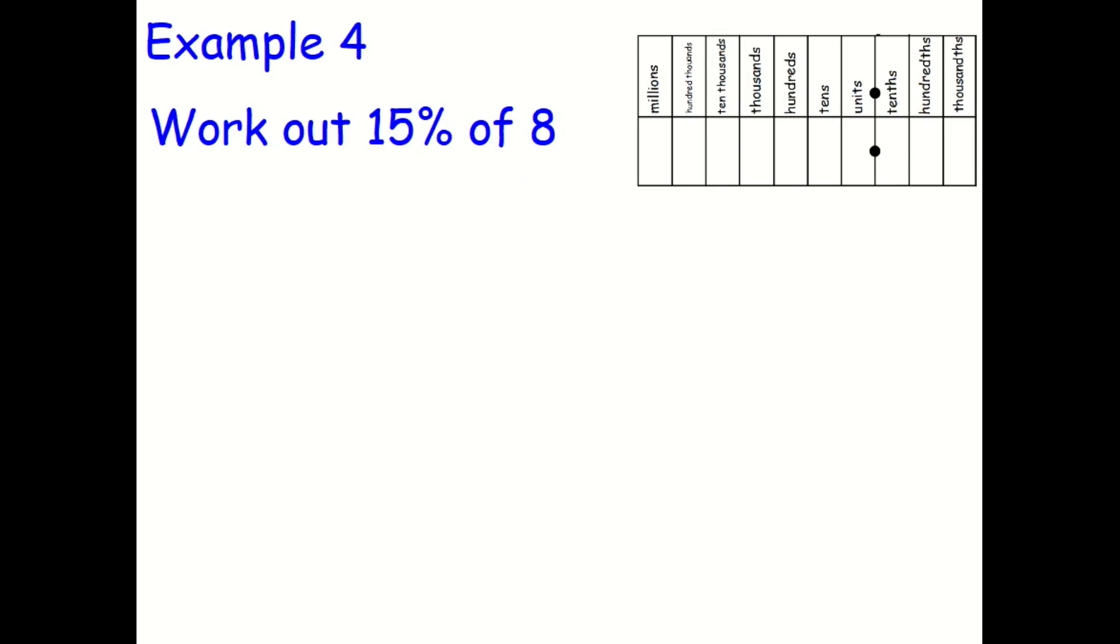Example 4, work out 15% of 8. So again, you can do 0.15 multiplied by 8. Or you can use this method. So 10% of 8. Remember, for finding 10%, we divide the number by 10, which means all digits jump one column to the right. So the 8 goes there. But my new number, of course, is 0.8. So 0.8 is 10%. Divide both sides by 2 to get 5%. Then I get 0.4. So 0.4 is 5%. And then I'm going to add those two numbers together because 10% plus 5% makes my 15%. So I'm going to add together 0.8 and 0.4. And that gives me that 15% of 8 is 1.2.